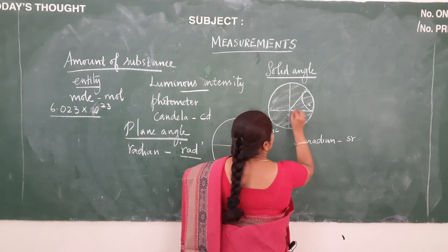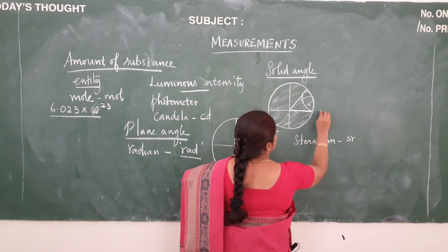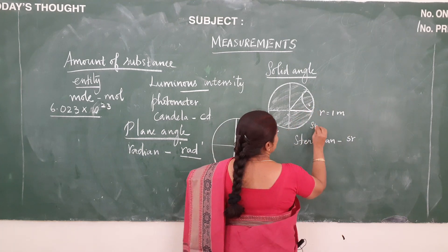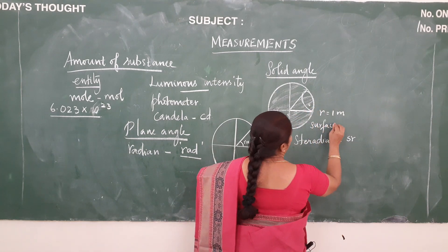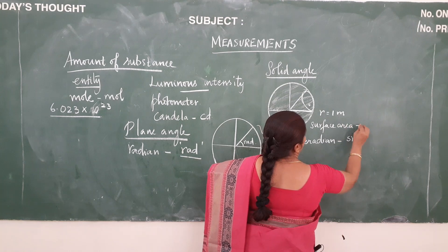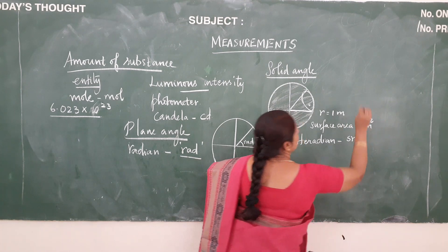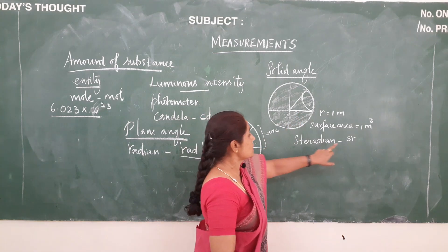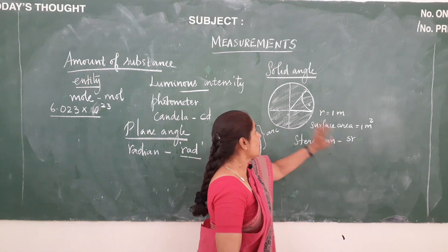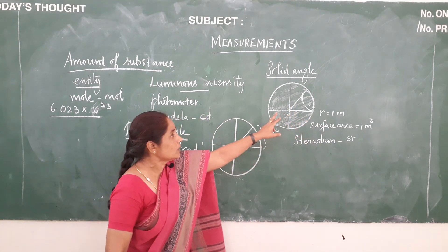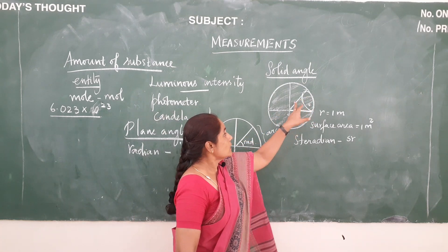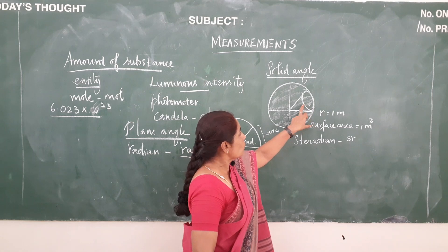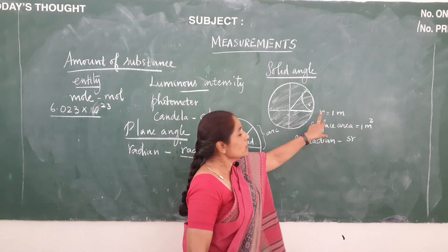Let us assume that the length of the radius is equal to 1 metre. In that case, the surface area will be equal to 1 metre square. Steradian is denoted by sr. Steradian is nothing but the angle subtended at the centre of the sphere whose surface area is equal to the square of the radius.